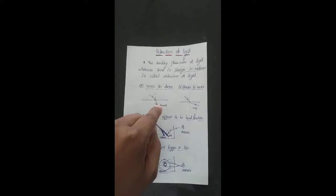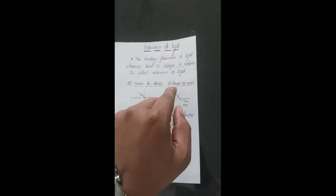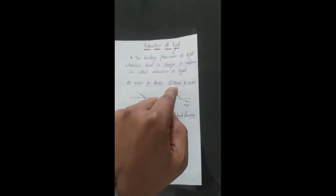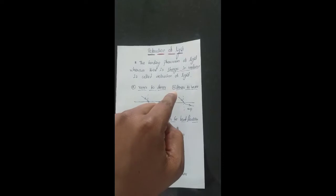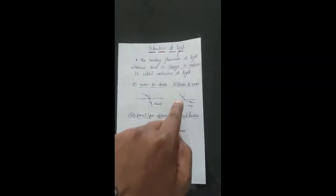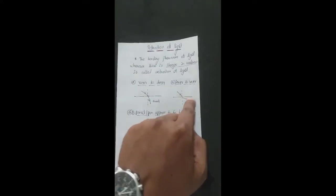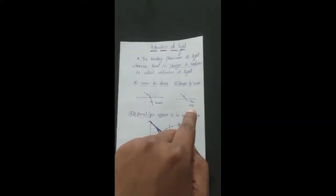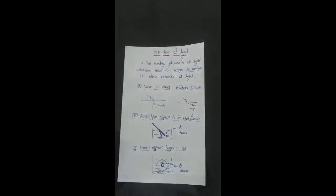In the second case, denser to rarer medium: the light ray is moving from denser to rarer, so it bends away from the normal. It bends away from the normal because its speed increases. So denser to rarer means speed increases and the ray bends away from the normal.